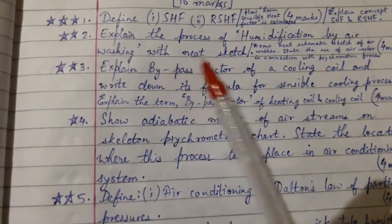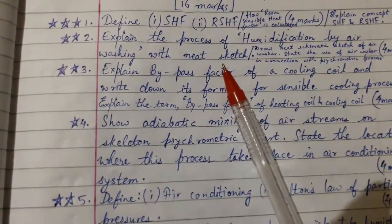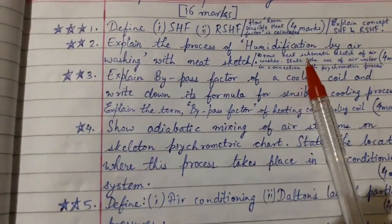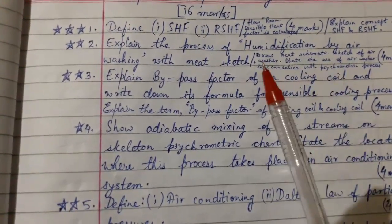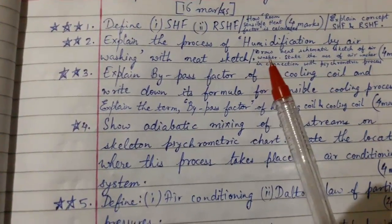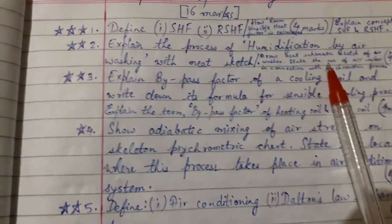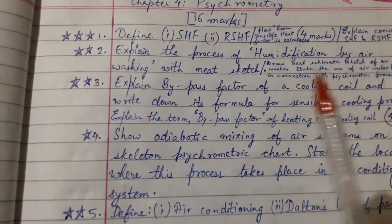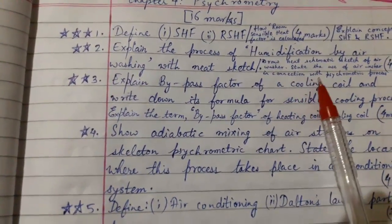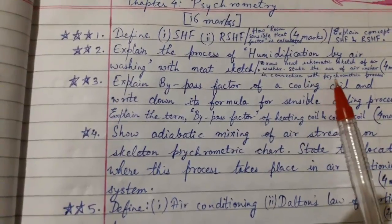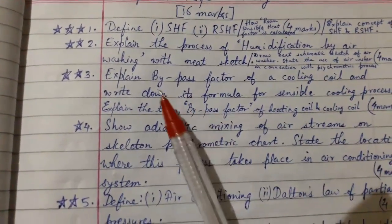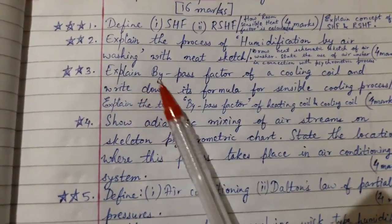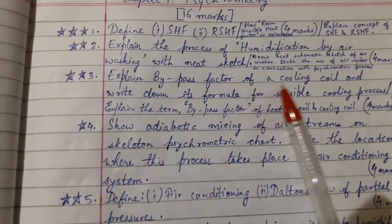Question 2 may also be asked as: draw a neat schematic sketch of an air washer, or state the use of an air washer in connection with the psychrometric process. This can be asked for four marks.